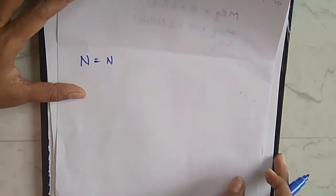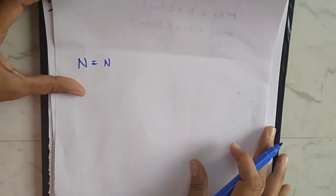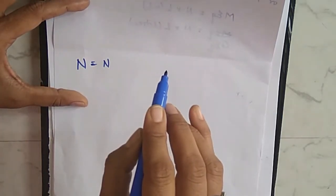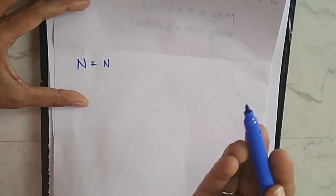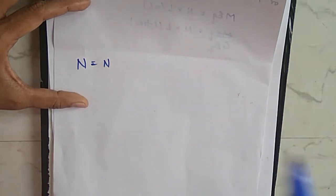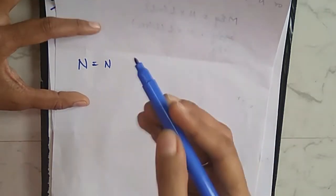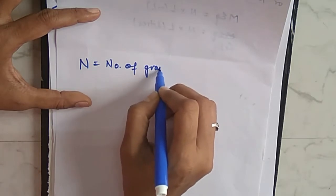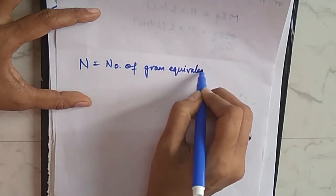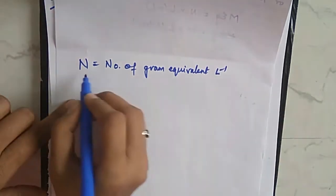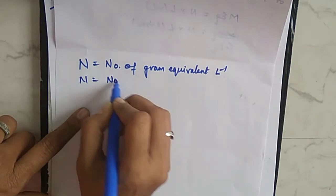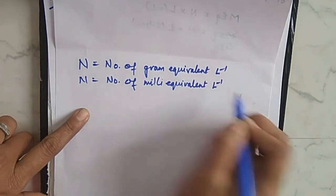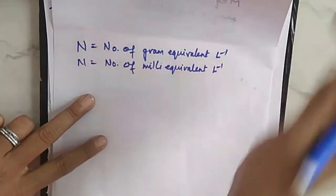Hello everyone. Today let us see the equation that we can use to determine the concentration of the mixture of acids obtained by mixing two different concentrated acids, or how to determine the total volume of the solution formed by mixing two different volumes and concentrations. We know that normality is equal to the number of gram equivalents per liter, or normality is equal to the number of milliequivalents per liter of the solution.